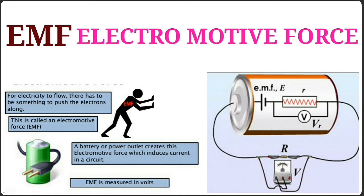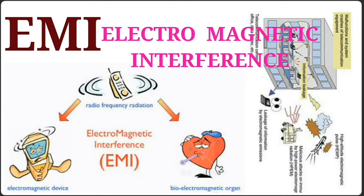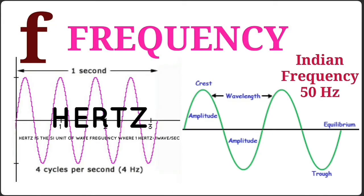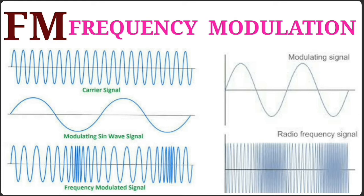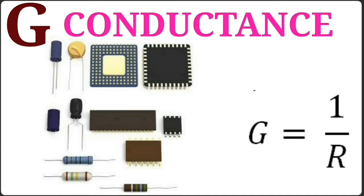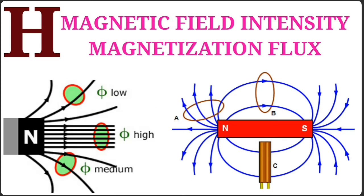EMI – Electromagnetic Interference. F – Frequency. FET – Field Effect Transistor. FM – Frequency Modulation. G – Conductance. H – Magnetic Flux Density.